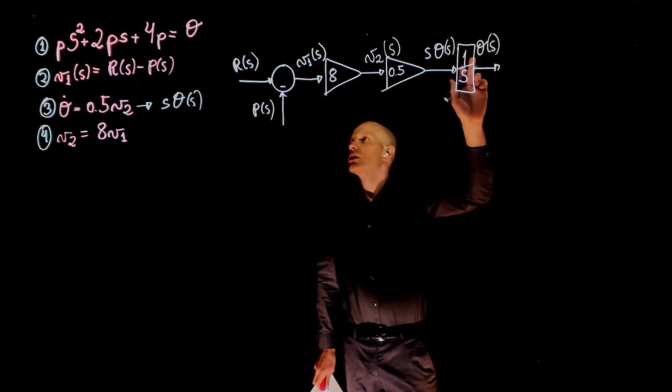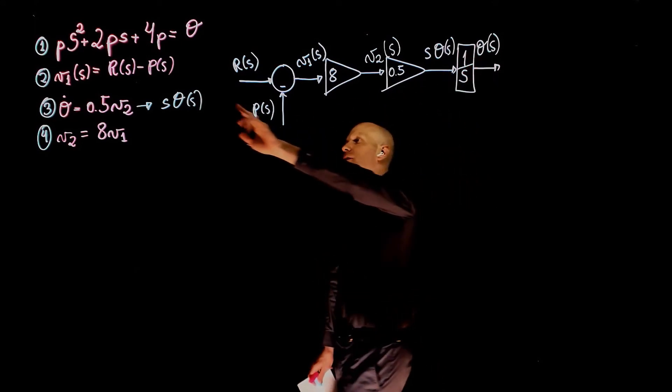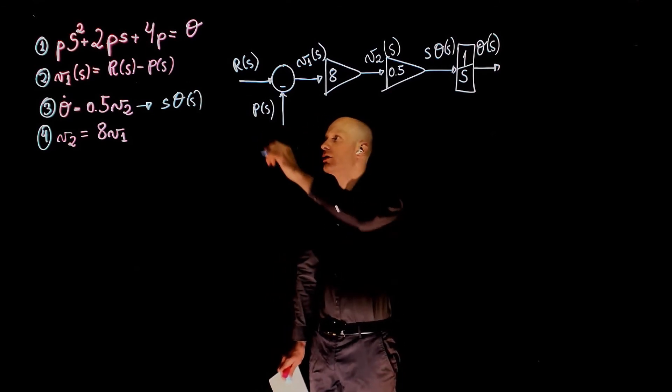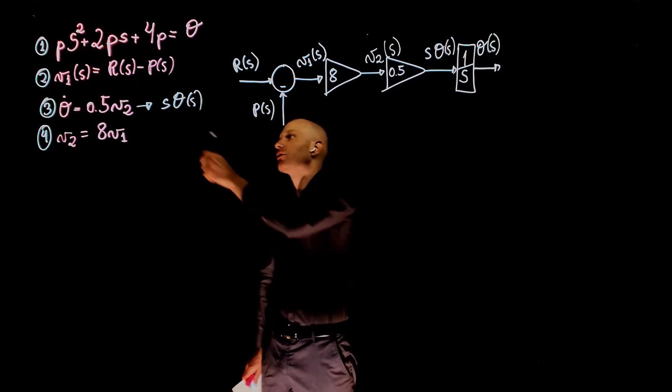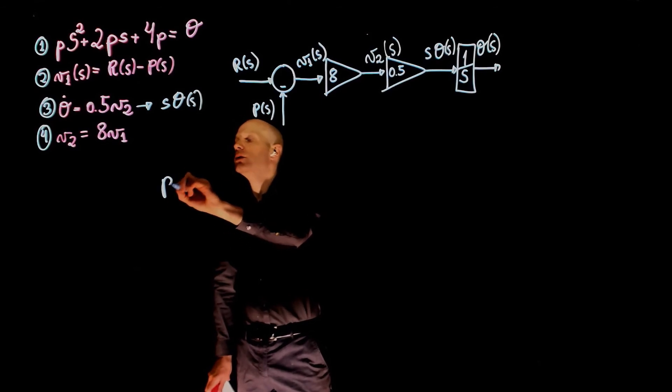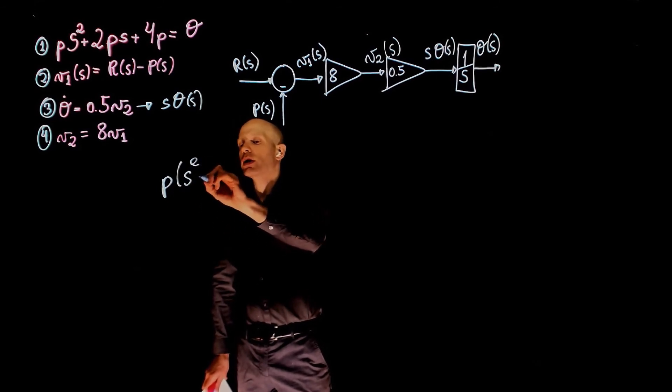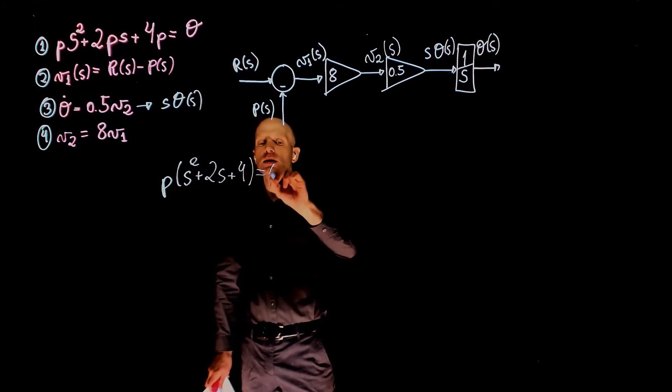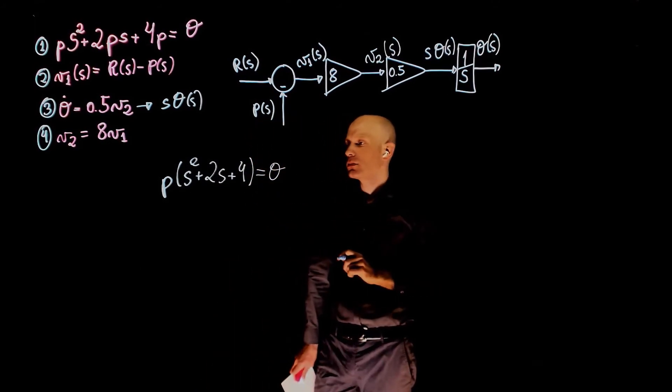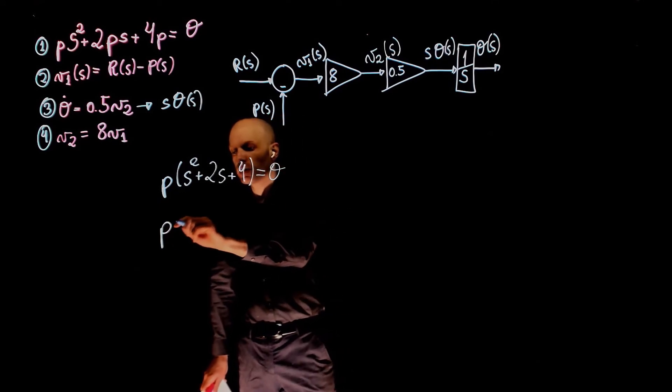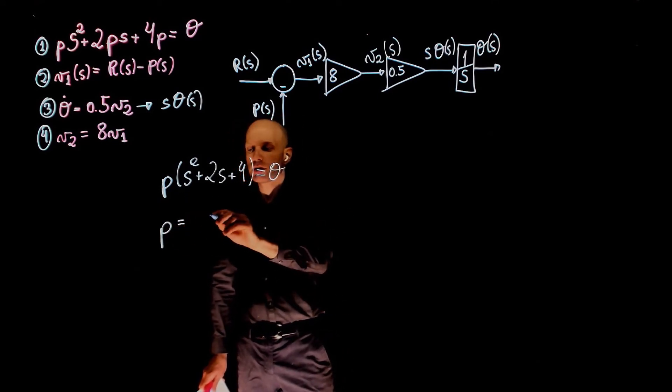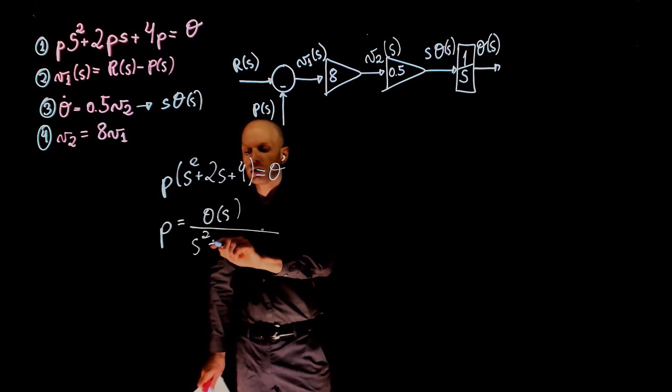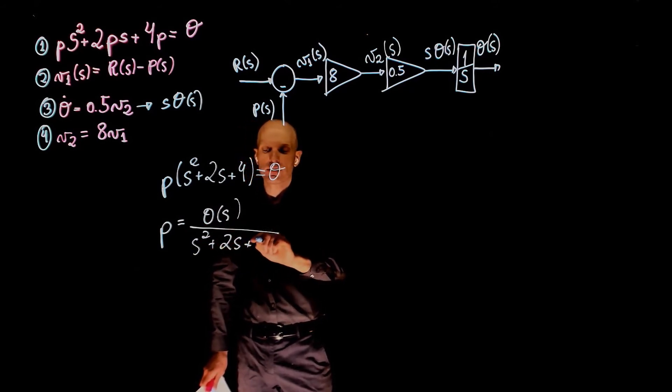Theta of s now can be related to p through this equation, and p is what we need here. So if you take the first equation, we can factor p from the right side. We get p times s squared plus 2s plus 4, and this is equal to theta. So p of s is equal to theta of s divided by s squared plus 2s plus 4.